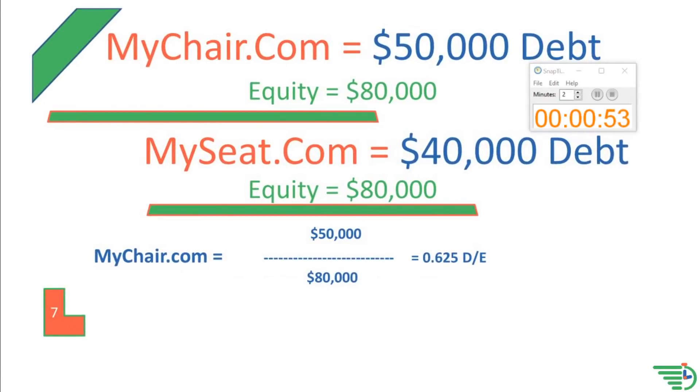So let's calculate MyChair first. After dividing the $50,000 debt by $80,000 in equity, we get a 0.625 Debt to Equity Ratio.